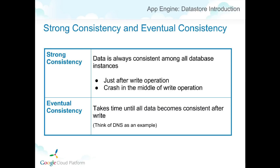Consistency can have two levels: strong or eventual. Strong consistency means the data is always consistent no matter which server you query — when a write operation finishes, data is already consistent across all servers. Eventual consistency means data will eventually be consistent, but there's a time frame where it is not. DNS is a good example: when you update a domain configuration, it's not reflected to all DNS servers immediately. For a period, some return old configurations and others return the new one, but eventually all return the new configuration.